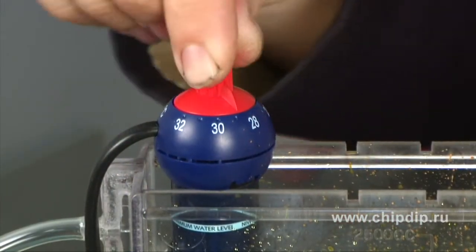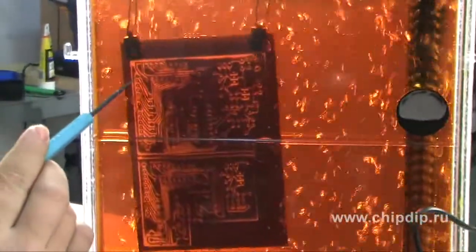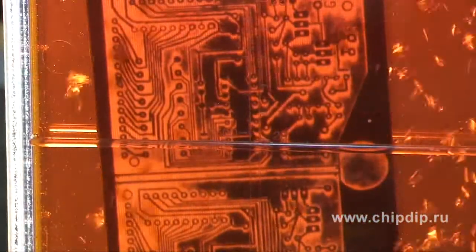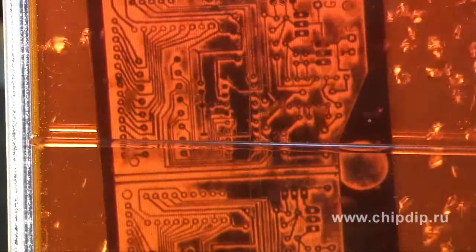Increasing the temperature, we significantly speed up the chemical process. The air bubbles mix up the solution in the tank, removing from the board surface the deactivated liquid. This provides us with even etching of the board.